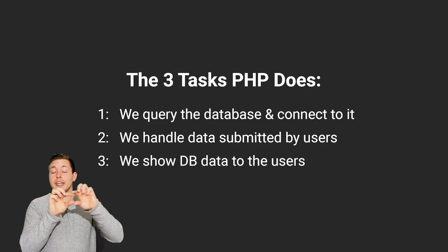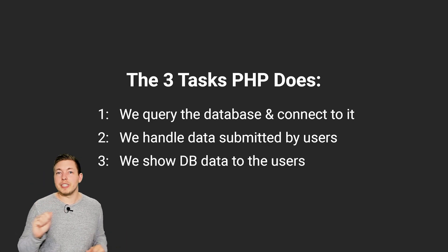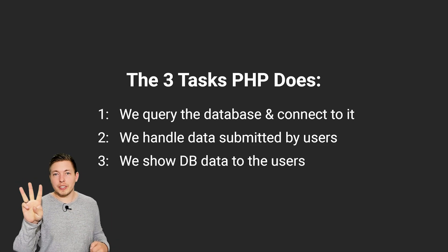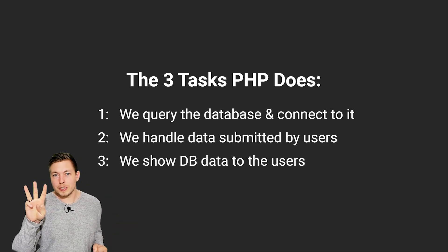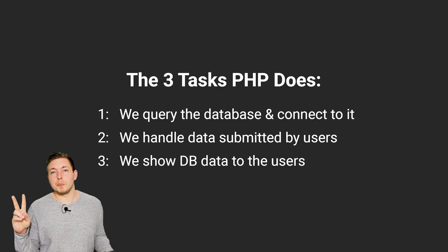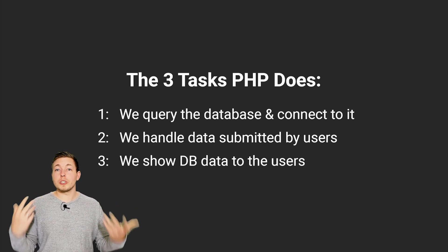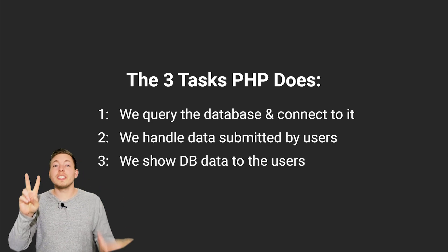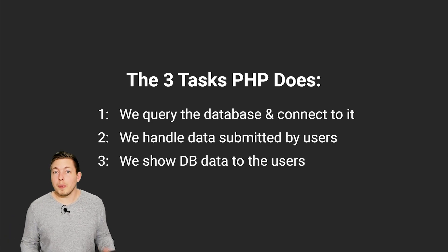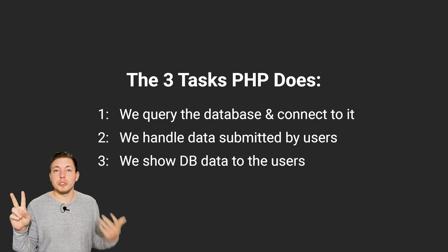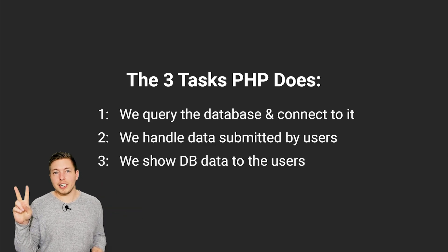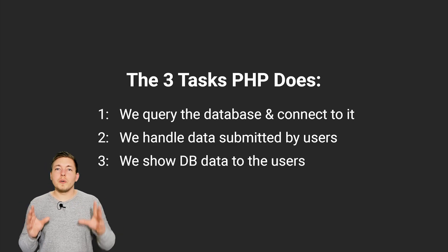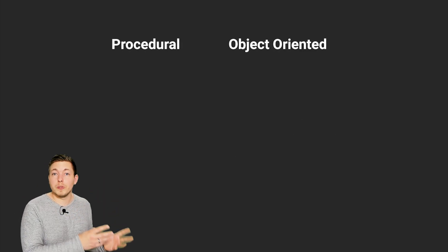In some cases we do all three things at once. For example, the user goes to a website, searches for a bunch of names, gives us some data, we query the database, and then show the list of names to the user. In other cases we only do two things — like a login system where we get data from the user and insert it into the database but don't show anything afterwards. Or we just query the database and show data to a logged-in user without them submitting anything.